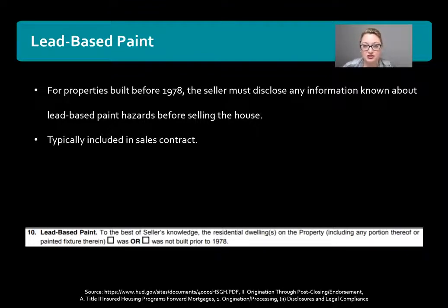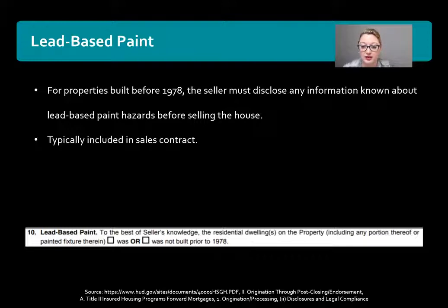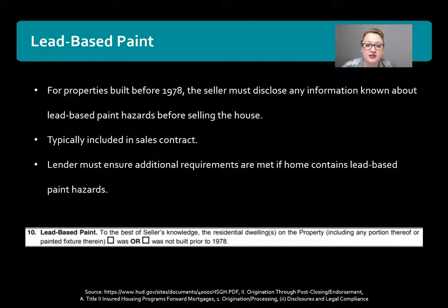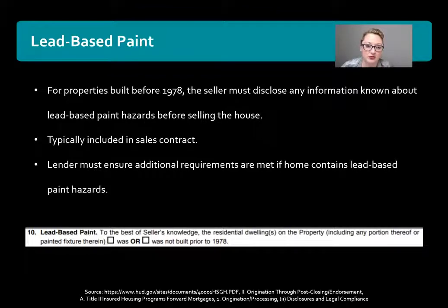Here's a quick snippet from the Georgia sales contract that specifically addresses lead-based paint. It says: to the best of the seller's knowledge, the residential dwelling on the property was or was not built prior to 1978. So if it's checked that it was not, then there's no issue. But if it checks that it was, then the lender is going to be required to ensure additional requirements are met if the home contains lead-based paint hazards.